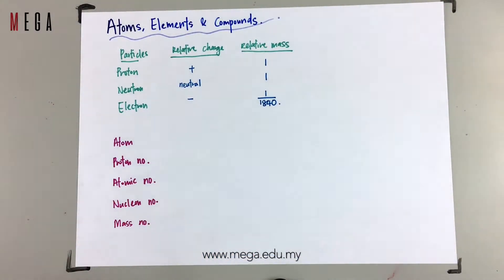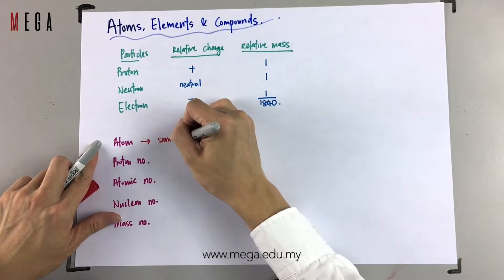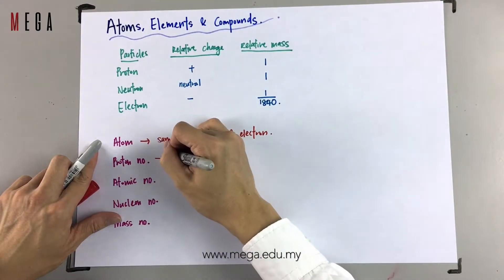Next, we go to the definition of some important terms. What is an atom? Basically, an atom is a substance that has the same number of protons and electrons. Therefore, they do not have any charge.